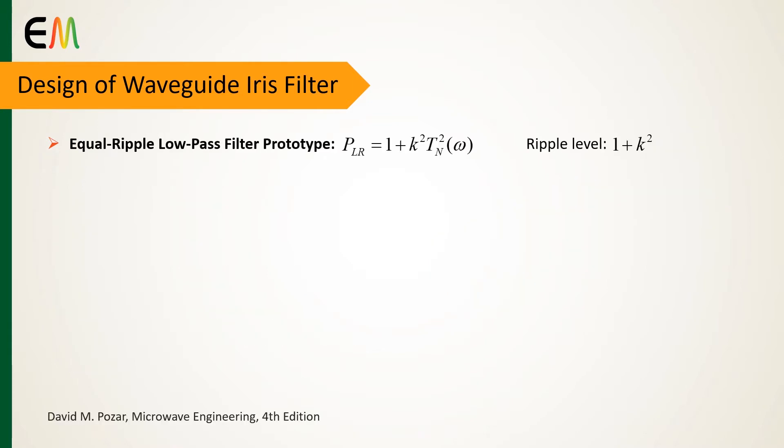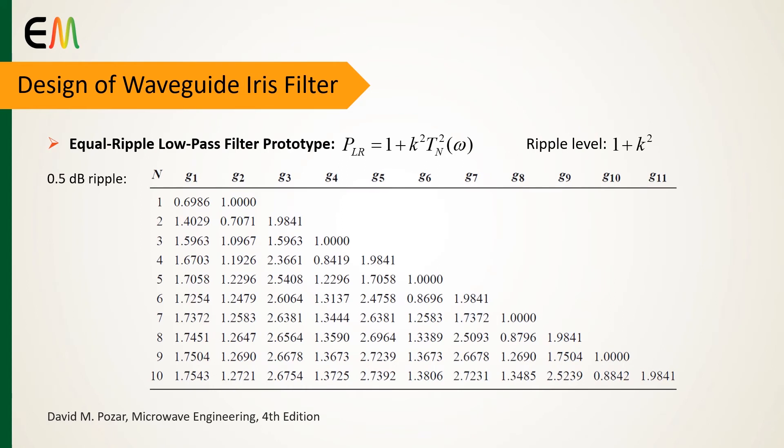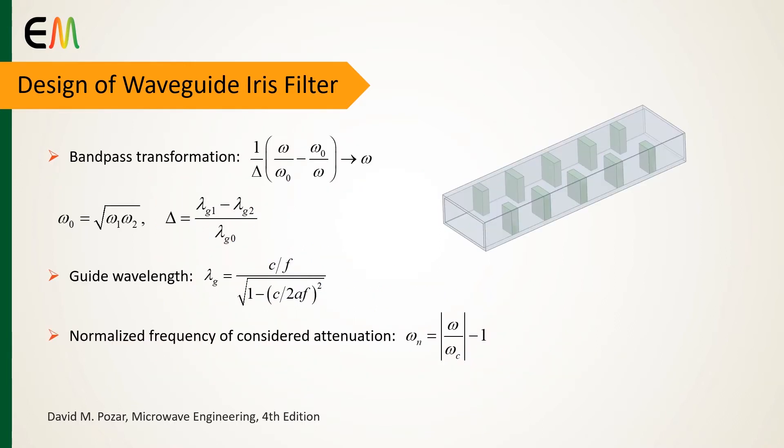The considered design is based on the equal ripple passband, which its low pass filter prototype is given by this equation. Tn function is the Chebyshev polynomial, and 1 plus k to the power of 2 determines the ripple level. This table is an example of element values for Chebyshev filters with 0.5 dB ripple level.